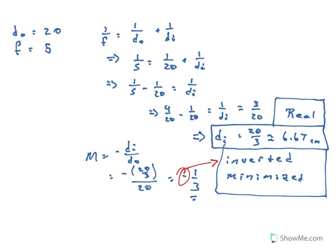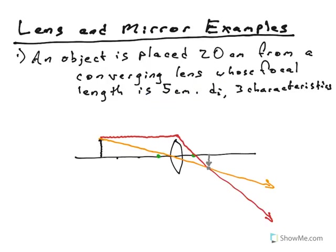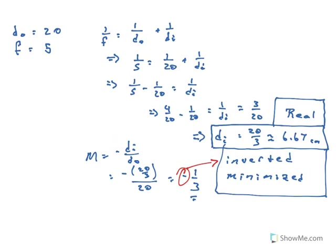Comparing to our drawing: inverted, real because it's on the right side of the lens, and minimized because the arrow is smaller. The math gave 6.67 centimeters; my drawing looked like about 10 centimeters, but obviously my drawing isn't perfect since I'm not using a ruler. Still, it's reasonable, and I trust the math more than the drawing — but the drawing does pretty much match the analytical result.